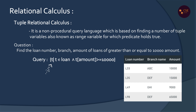Let's explain the query. T is a temporary variable. T belongs to the Loan table — so T represents a tuple from the Loan table. T.Amount represents the Amount attribute from the Loan table. The condition is Amount greater than or equal to 10,000. This query returns all columns from the Loan table satisfying that condition.